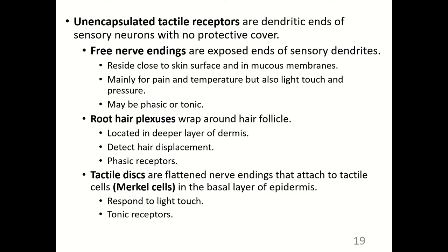Root hair plexuses wrap around the hair follicle, located in the deeper layer of the dermis, and detect hair displacement. They are phasic receptors — when your hair moves it will be recognized, but it will adapt unless pulled. Tactile discs are flattened nerve endings that attach to tactile cells called Merkel cells in the basal layer of the epidermis. Merkel cells respond to light touch and are tonic receptors — they will not adapt.